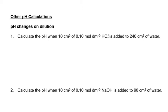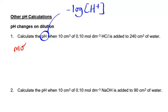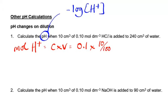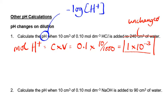Example one: we need to work out the pH, and to get the pH we need the hydrogen ion concentration — remember pH = −log[H⁺]. We have an initial volume and concentration, so we can work out the initial moles of hydrogen ions: concentration × volume = 0.1 × 10/1000 = 1 × 10⁻³ moles of hydrogen ions. This will remain unchanged when we dilute.